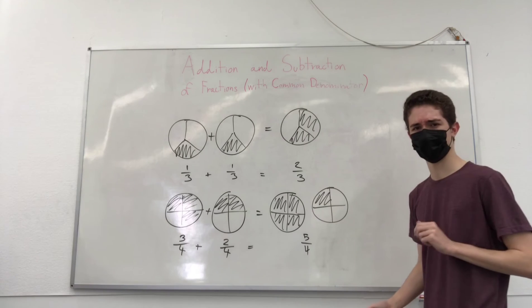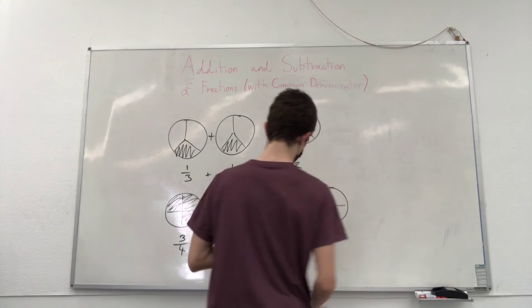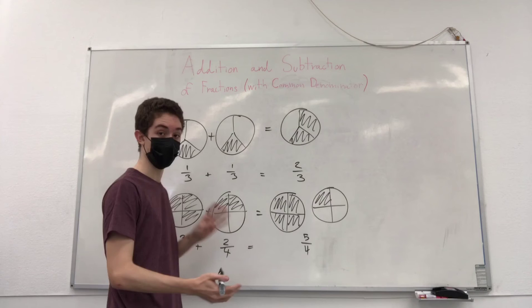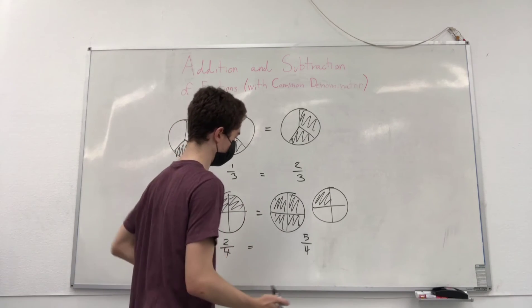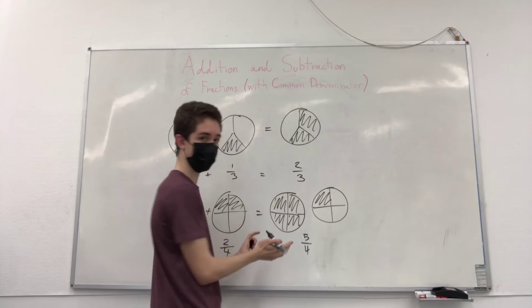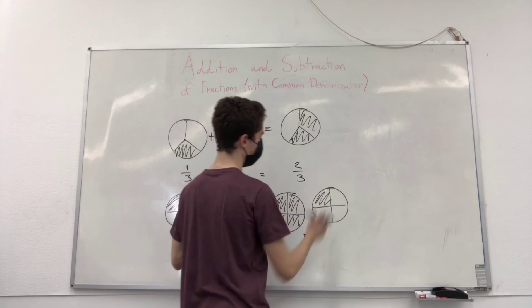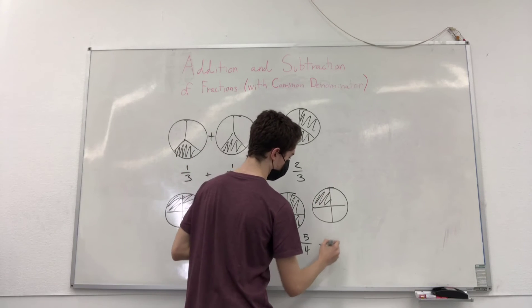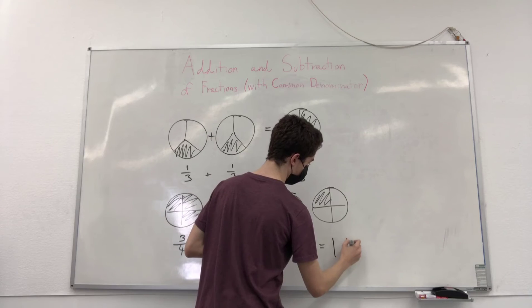And also, just to add, you could also write this in another way, which is called mixed numbers, where you think, okay, we have one whole pizza, correct? We have one whole pizza, and one fourth. So this is the same thing as writing one and one fourth.